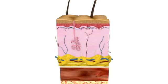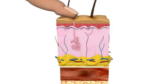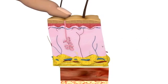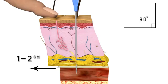The z-track route is used when the medication can stain or cause skin irritation. The skin is pulled to one side, which moves the subcutaneous tissue approximately one to two centimeters. The needle is inserted at a 90 degree angle and after aspiration the medication is inserted into the muscle, whereupon the nurse waits 10 seconds.